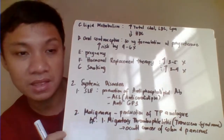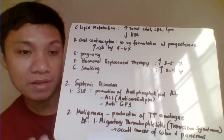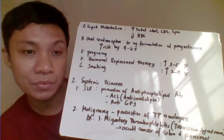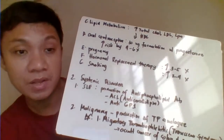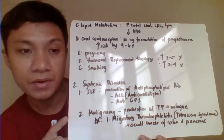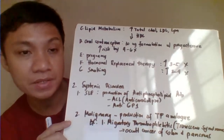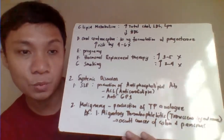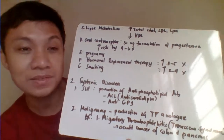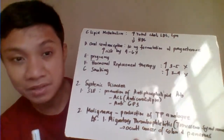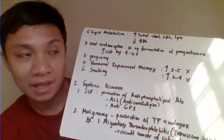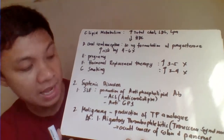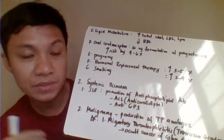Systemic disorders can also be responsible for thrombosis development. The first is SLE (systemic lupus erythematosus), where the patient develops antiphospholipid antibody directed toward the phospholipid component of different tissues, resulting in thrombosis. Examples of antiphospholipid antibody include anti-cardiolipin and anti-β2GPI antibody — these are prothrombotic.